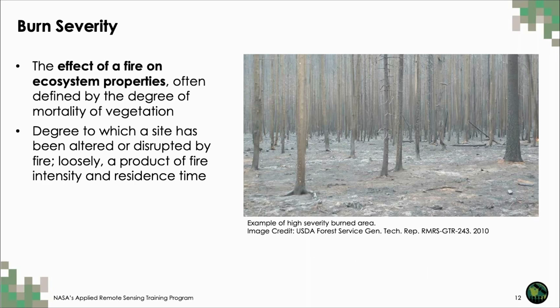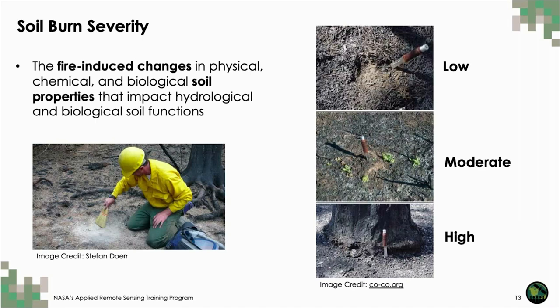This brings us to an important mappable metric for post-fire assessment. Burn severity is the effect of a fire on ecosystem properties and is often defined by the degree of vegetation mortality. We usually think about burn severity as a way to measure the degree to which a site has been altered or disrupted by a fire, with severity determined by fire intensity and residence time.